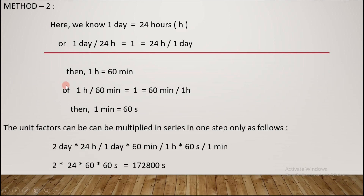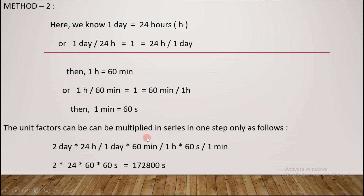Now using the unit factor method, as we know: 1 day = 24 hours, so unit factors are 1 day / 24 hours = 1, or 24 hours / 1 day = 1. Similarly, 1 hour = 60 minutes gives unit factors 1 hour / 60 minutes = 1 or 60 minutes / 1 hour = 1. And 1 minute = 60 seconds gives 1 minute / 60 seconds = 1 or 60 seconds / 1 minute = 1.